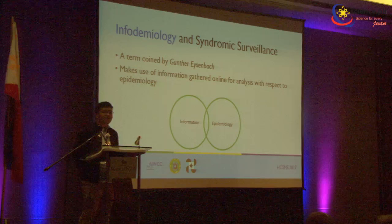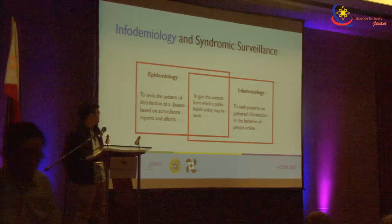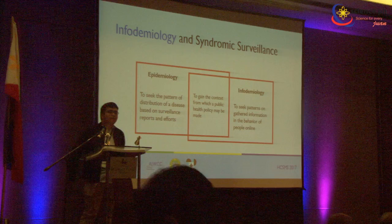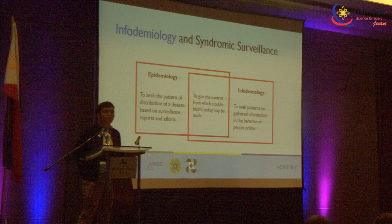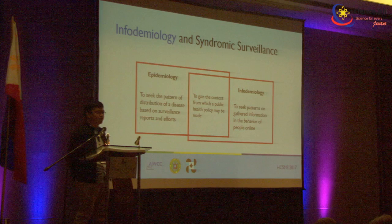In traditional epidemiology, we look at official surveillance records to create public policy. We get data from the Department of Health through existing surveillance systems. In infodemiology, what we are trying to look at is the spread of health-related information online — from social media and Google searches.